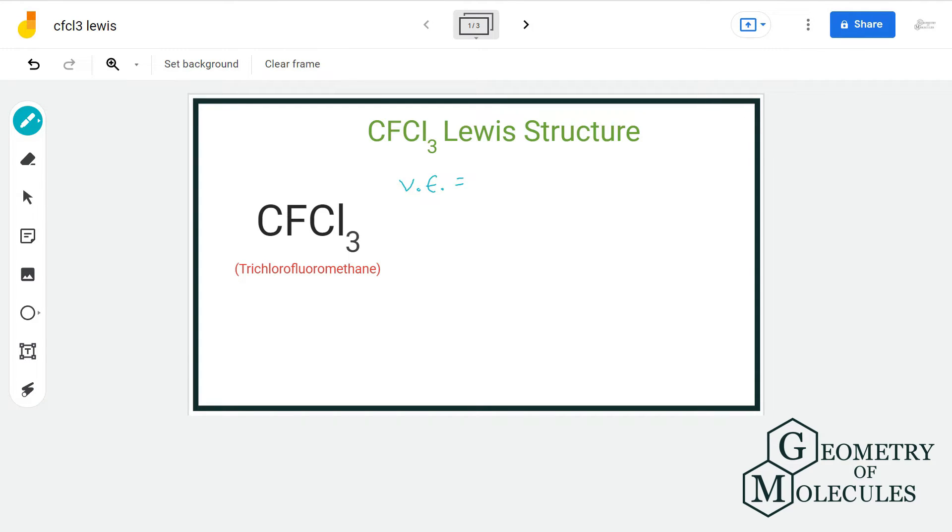We have one carbon atom having four valence electrons, one fluorine atom having seven valence electrons, and three chlorine atoms having seven valence electrons. That gives us a total of 32 valence electrons.